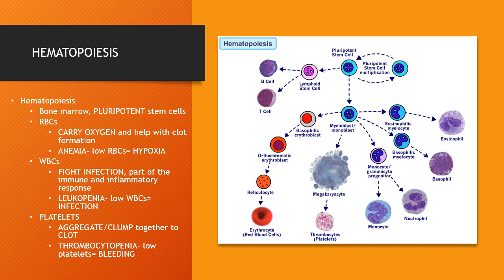Stem cells in the marrow are referred to as pluripotent, meaning they have the ability to become any of the blood cells. Hormones in the bloodstream signal the stem cells to become either lymphoid, which creates our T and B lymphocytes and grows our immune system, or myeloid. Myeloid cells then differentiate into either red cells, white cells, or platelets.